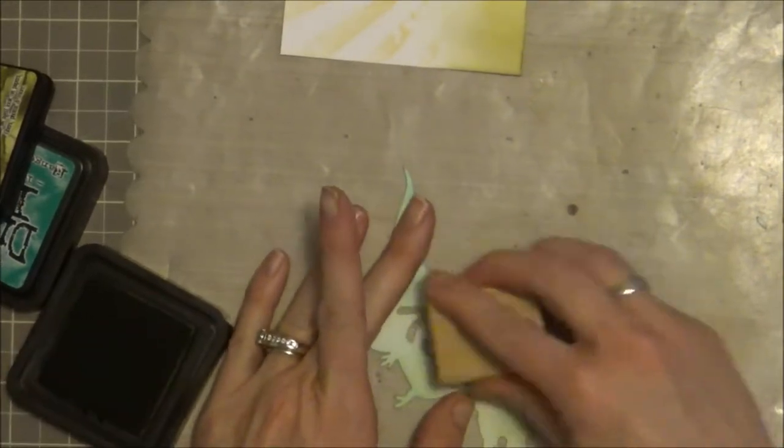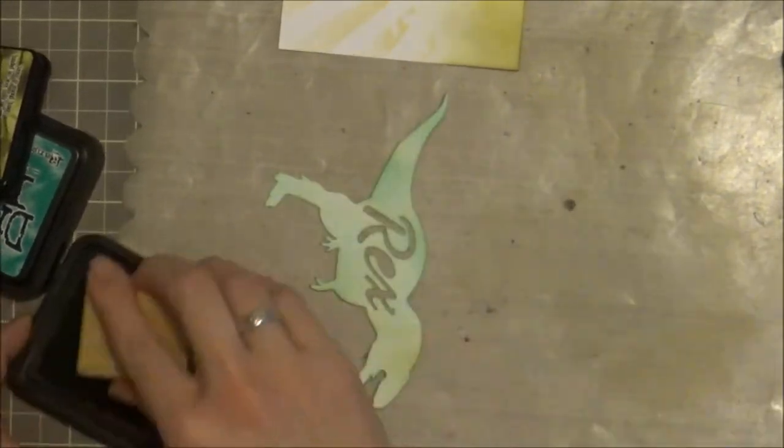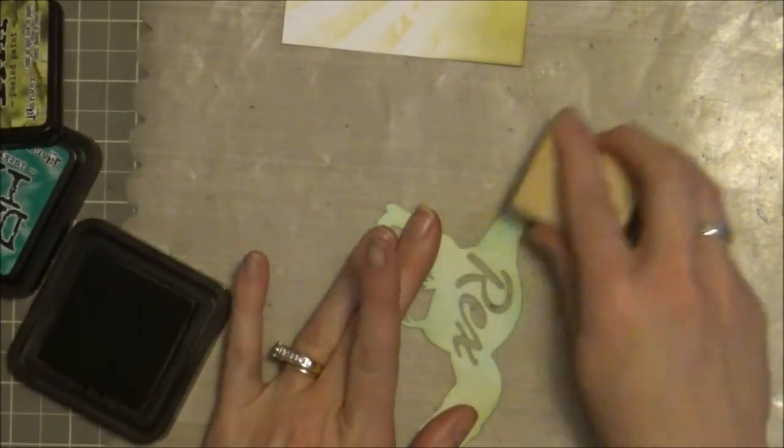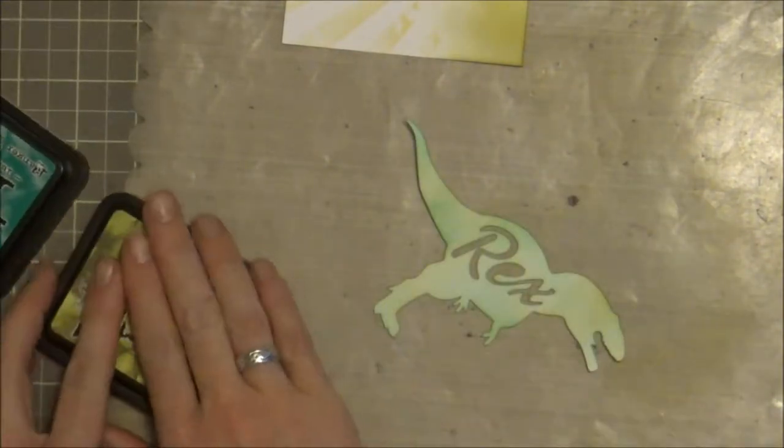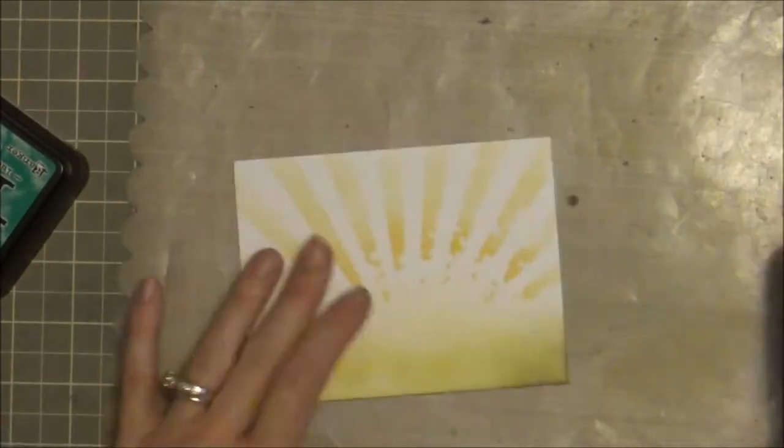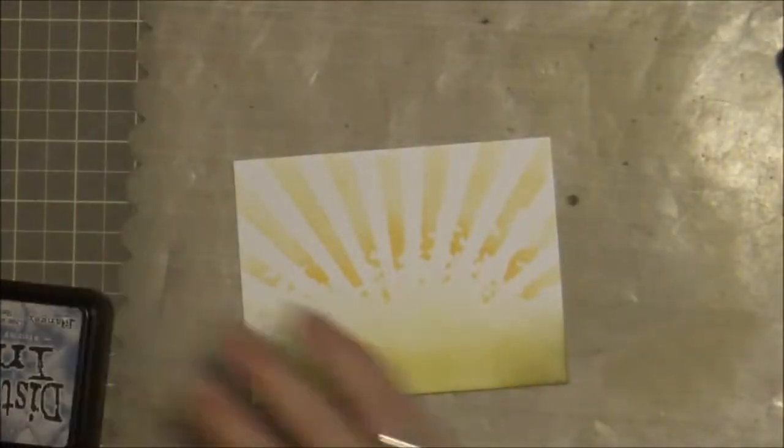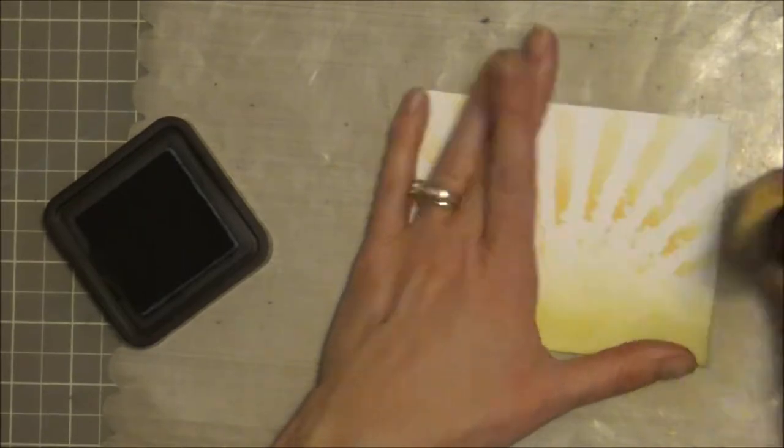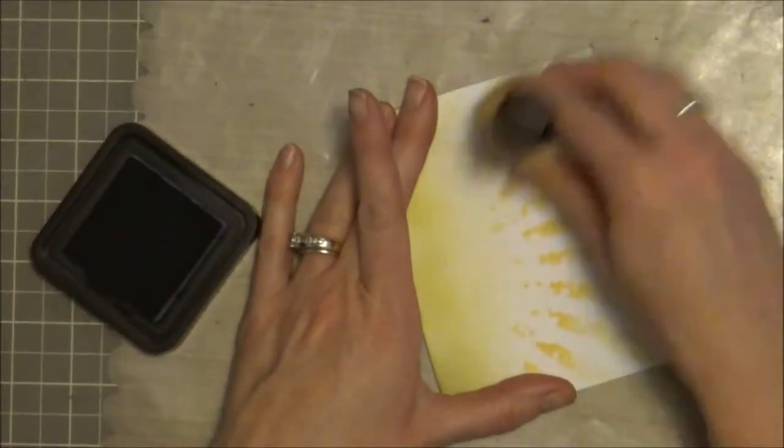And then I'm going to set that aside, and I decided to add a little bit of color to kind of the sky area of my background. So I'm using a little bit of stormy sky distress ink and again that ink blending tool just kind of lightly.